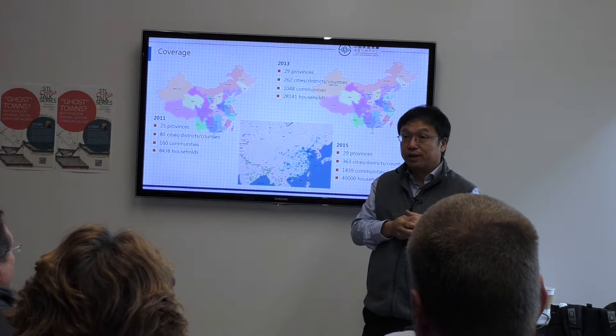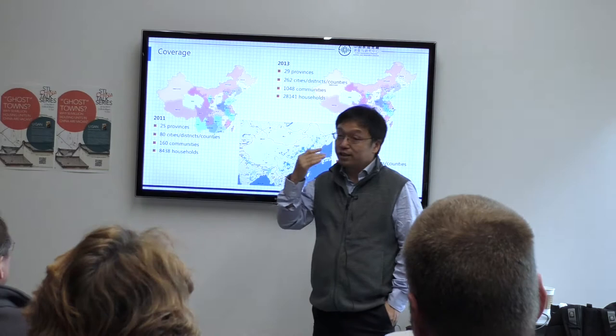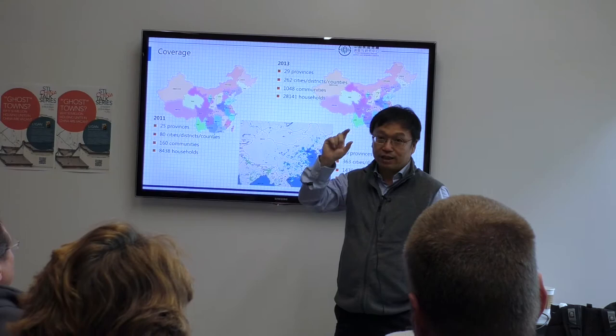For each province we have the list of per capita GDP per county that's available, and we basically decide how many counties to include. We have 14% of the Chinese counties on average in each province.